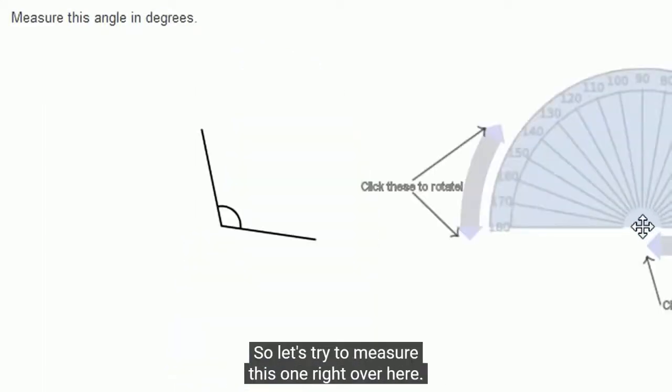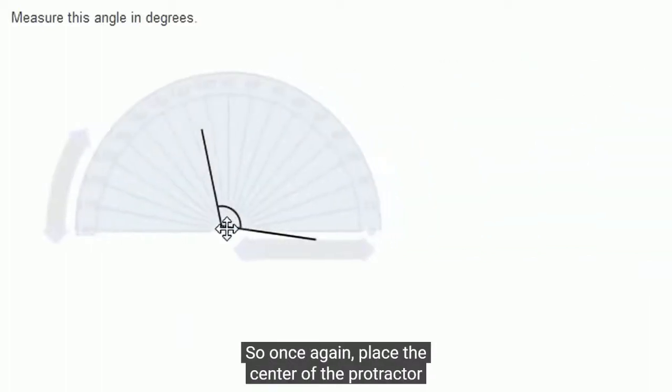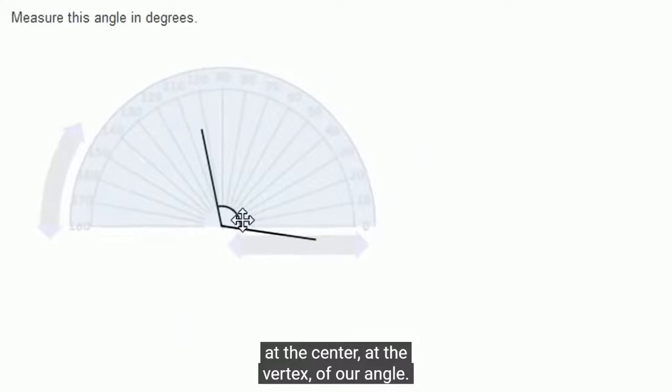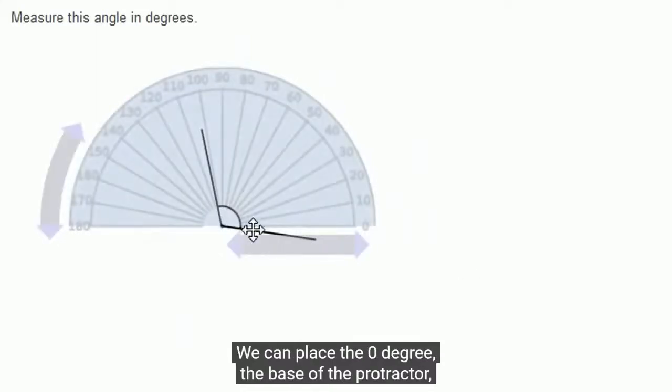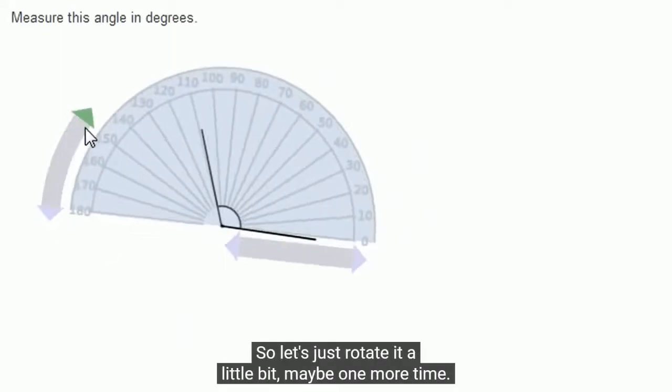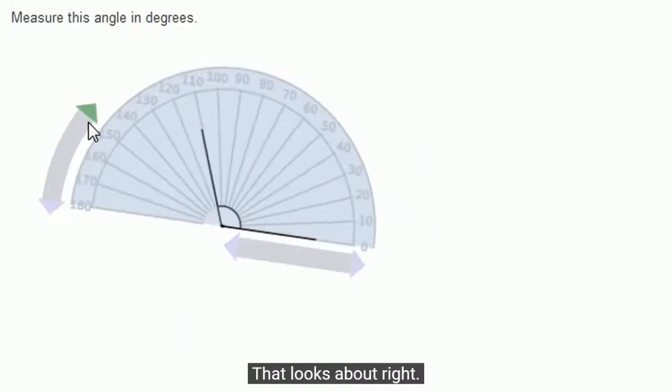Let's try to measure this one right over here. So once again, place the center of the protractor at the vertex of our angle. We can place the zero degree, the base of the protractor, at this side of the angle. So let's just rotate it a little bit. That looks about right.